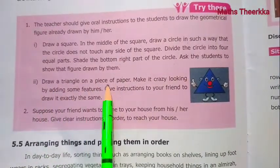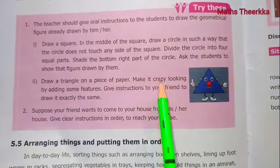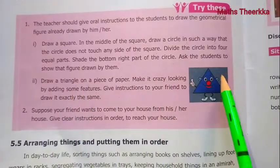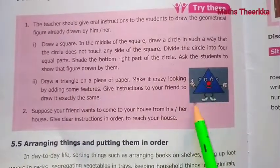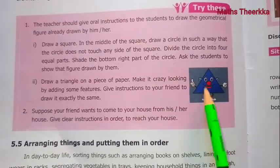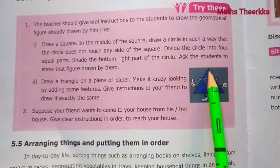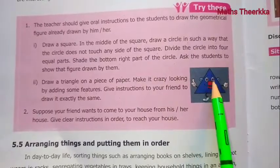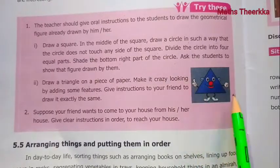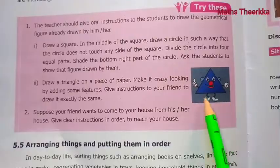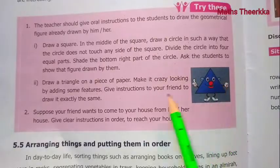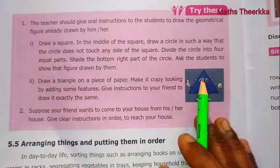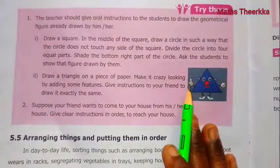Draw a circle on a piece of paper. Make it look like a face by adding features: eyes, nose, mouth, ears, legs, and hands — draw everything so you can play with it.